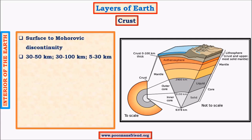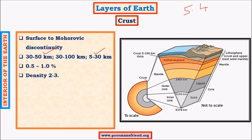The crust extends from the Mohorovicic discontinuity. Its thickness varies from 50 to 30 kilometers in continental regions and only about 5 to 30 kilometers at oceanic regions. The crust makes up about 0.5 to 1% of the earth's total volume, and its density varies from 2 to 3 times that of water. The overall density of earth is about 5.4; outer layers are less dense while inner layers are very dense.